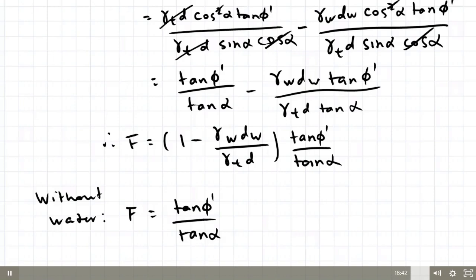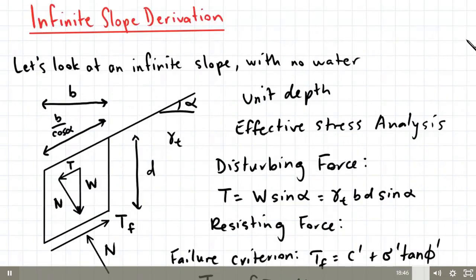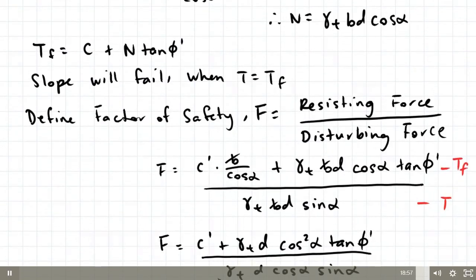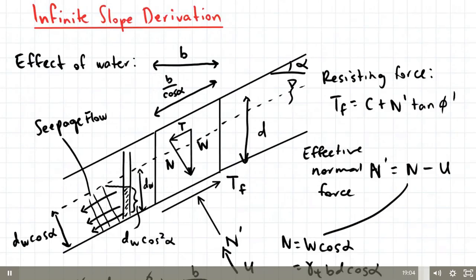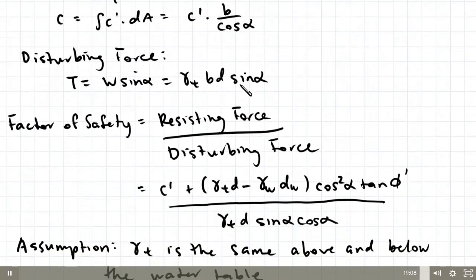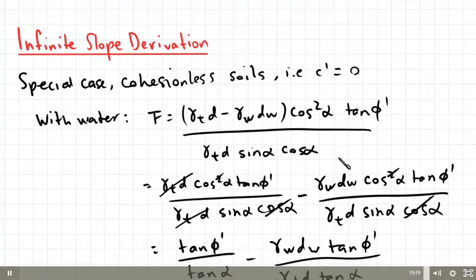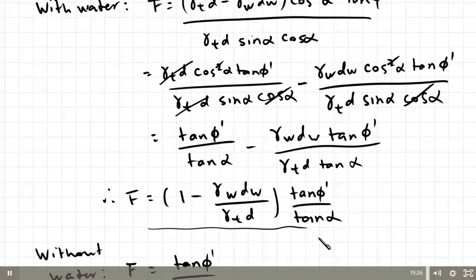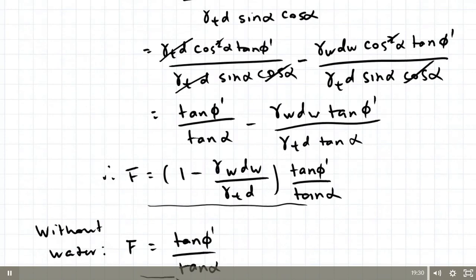To recap on the infinite slope derivations: for an infinite slope with no water we derived the factor of safety expression including cohesion. For a cohesive soil with a water table we derived the full factor of safety. For cohesionless soils in the presence of water the factor of safety is (1 minus gamma W dw over gamma T D) tan phi dash over tan alpha, and without water it simplifies to tan phi dash divided by tan alpha. That's it for today's video, hope this helps.